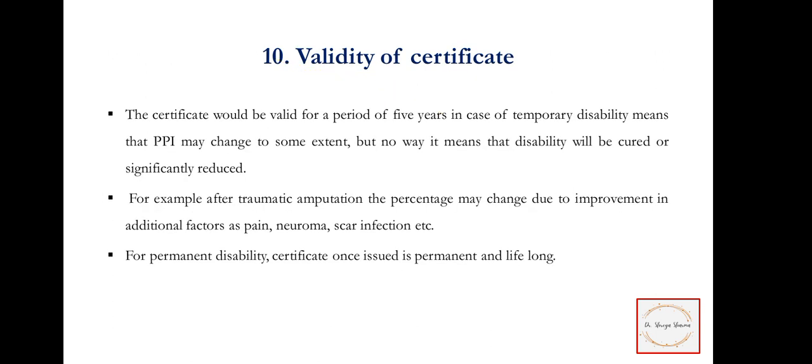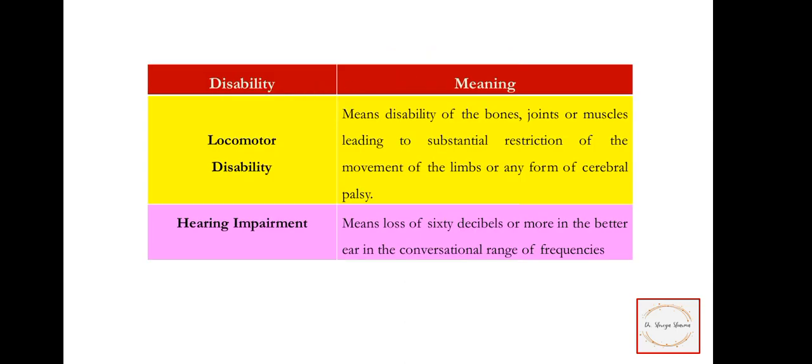The ninth principle is validity of certificate. A certificate is valid for a period of five years in case of temporary disability. There are two types: temporary and permanent. For temporary disability, it is valid for five years — for example, after traumatic amputation the percentage may change due to improvement in additional factors such as pain, neuroma, scar, or infection. Permanent disability can be given a permanent certificate which is lifelong for the patient, with no change.